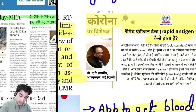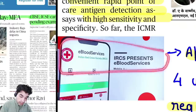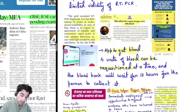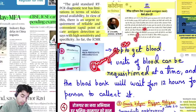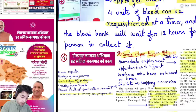The RT-PCR test has availability limitations — availability is low — whereas the antigen test is easily available, which is why we are searching for an alternative. Now, e-Blood Services — an app by the Indian Red Cross Society — has been launched. Through this app, up to four units of blood can be requisitioned at a time. The blood bank procedure will be streamlined, and the bank will wait up to 12 hours for the person to collect blood. In emergencies, quick availability of blood is essential, making this application very useful.